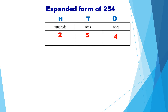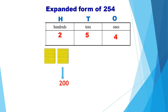Let us see this using the tens blocks. One, two — two hundred blocks, so the value is 200. Moving on to the tens place, we have five tens — one, two, three, four, five. Five tens means the value is 50.